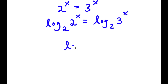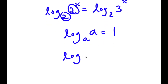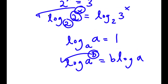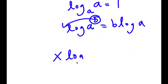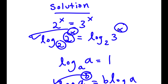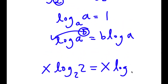Now, if I have something in the form log base a of a, this is simply equal to 1. And if I have log base a of something to the power of b, I can move the exponent b to the front. So x times log base 2 of 2 is equal to x times log base 2 of 3.